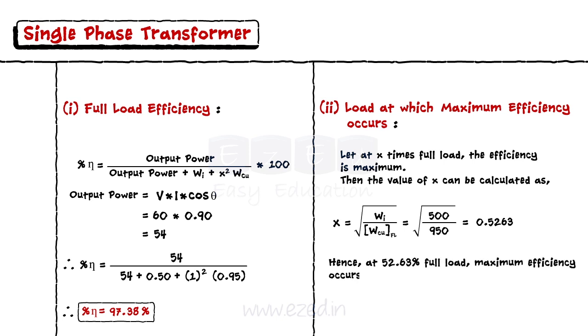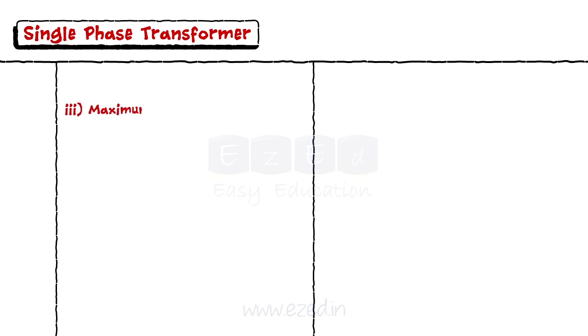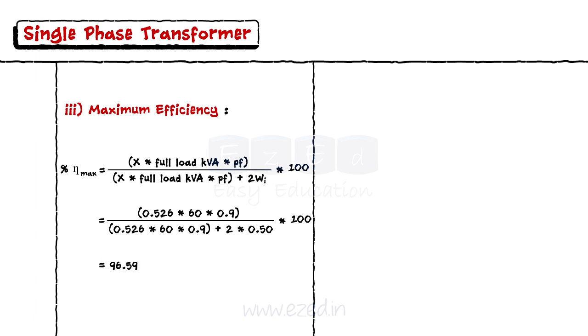The formula for maximum efficiency is x into full load kVA into power factor upon x into full load kVA into power factor plus 2 into core loss into 100. Putting all the values, we get the maximum efficiency equal to 96.59%.